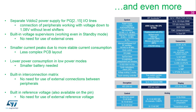The STM32L4 offers much more. Listing only a few more features: separate power supply for GPIO port G pins 2 to 15 and for the USB peripheral. The first allows interfacing low-voltage appliances down to 1.08V without voltage level shifters. The second can reduce current consumption when the USB cable is not connected. Current peaks in the power supply are reduced by the new MCU design, offering low requirements for supply filtering.